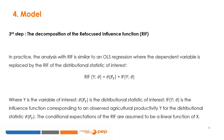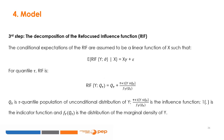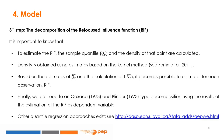In practice, the analysis with RIF is similar to OLS regression, where the dependent variable is replaced by the RIF of the distributional statistic of interest. Conditional expectations of the RIF are assumed to be a linear function of X. To estimate the RIF, the sample quantile q_tau and the density at that point are calculated; density is obtained using kernel method estimates (see Fortin et al. 2011). Based on estimates of q_tau and the calculation of f(q_tau), it becomes possible to estimate the RIF for each observation. Finally, we proceed to the Oaxaca (1973) and Blinder (1973) decomposition type using the results of the RIF estimation as the dependent variable.